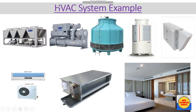Now let's look at HVAC system examples. This is the air-cooled chiller and this one is the water-cooled chiller. Here we have the cooling tower, VRF, exhaust unit, and a split unit system. This one is the indoor unit and this one is the outdoor unit of the split system. This is the FCU — fan coil unit. As you can see in this room, this is the FCU grill, through which you can control the temperature and humidity of the room with the help of a thermostat.